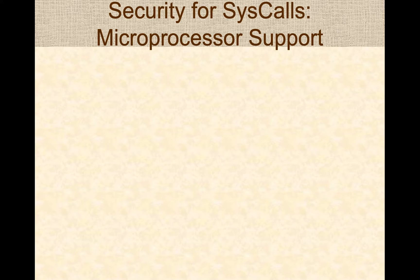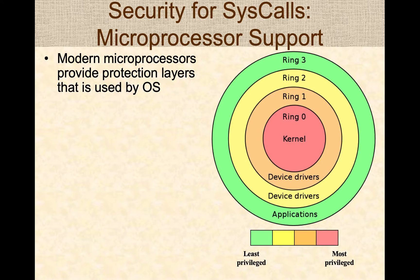In order for syscalls to work, most modern microprocessors provide protection layers to ensure that malicious user applications cannot jeopardize the operation of the operating system kernel. To ensure this, the kernel typically runs in what is known as Ring 0, the most privileged or protected layer in the microprocessor. All other applications run in Ring 3. This is a typical security setup provided by the microprocessor, specifically on the x86 platform supported by Intel and AMD.